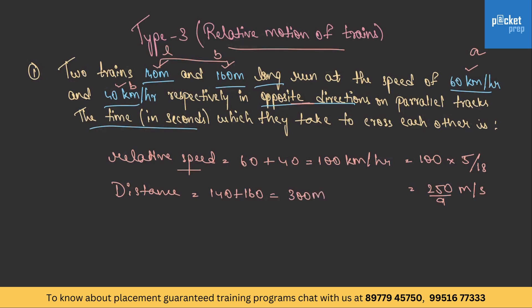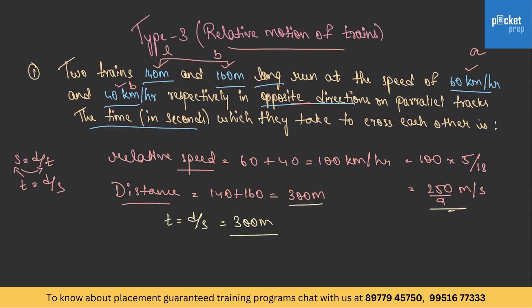We have the speed and distance. Using time = distance / speed: time = 300 ÷ (250/9) = 300 × 9/250 = 54/5 = 10.8 seconds. We have got the time.